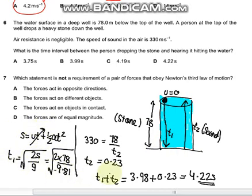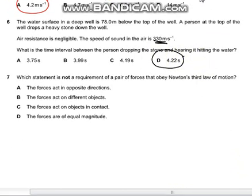This can be found by s equals ut plus half at squared. Initial velocity is 0, so T1 would become 3.90. The other time is T2, which is when the sound of the stone hitting is heard. So 330 equals 78 over T2, which would be 0.23 seconds. The overall time would be 4.22 seconds, which is D.